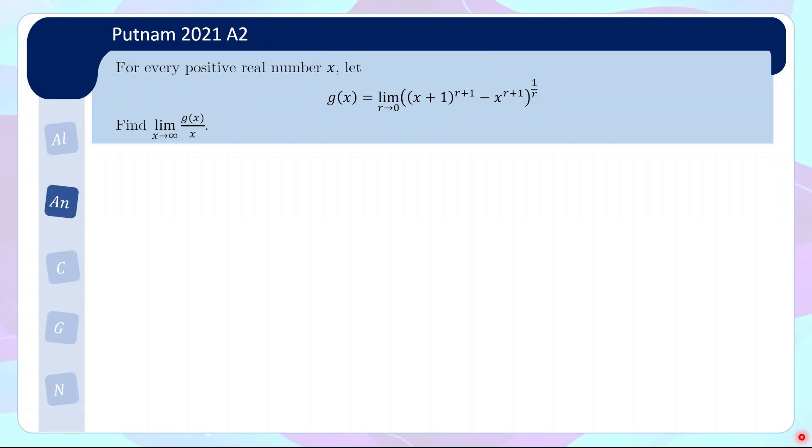So problem 2 is a real analysis problem, or perhaps you could call it a calculus problem. So for every positive real number x, so we fix x, we define the function g(x), given by the limit as r goes to 0 of [(x+1)^(r+1) - x^(r+1)]^(1/r). So for each fixed x, we take the limit over r. This gives us a function that depends on x. Now we are required to find the limit of g(x)/x as x goes to infinity. So this limit is definitely not very intuitive and very hard to grapple with. But when we try to compute a limit that is often difficult to grapple with, one of the things that come to mind would be L'Hôpital's rule.